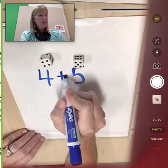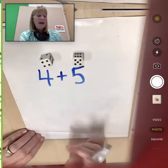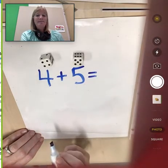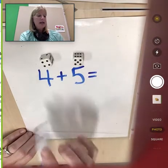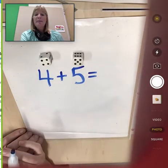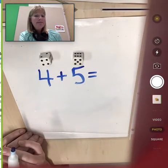Now, let's put an addition sign between those. We're going to find the sum of four plus five. So we need an equal sign. Go ahead and count all of those dots. These four plus these five. And see what you get. Did you get nine? Yes.